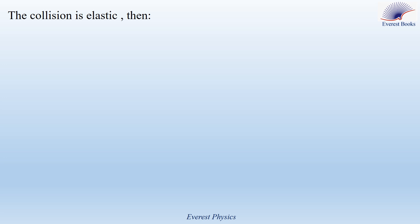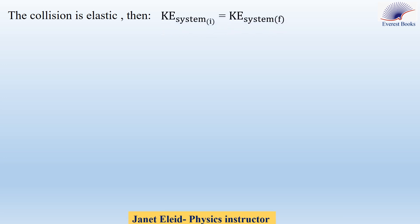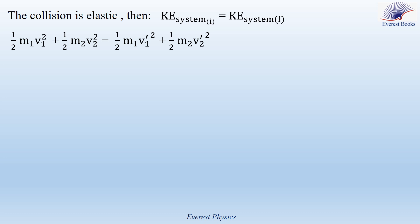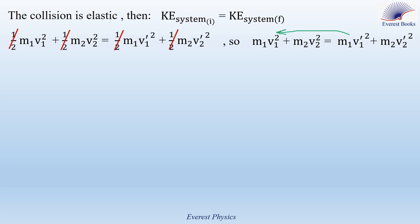Since the collision is elastic, the kinetic energy of the system before the collision equals the kinetic energy after: ½·M1·V1² + ½·M2·V2² = ½·M1·V1'² + ½·M2·V2'². The halves cancel out, giving M1·V1² + M2·V2² = M1·V1'² + M2·V2'². Rearranging, M1·(V1² − V1'²) = M2·(V2'² − V2²).